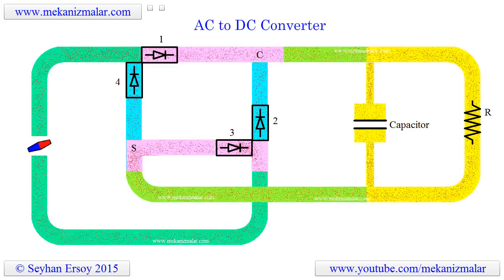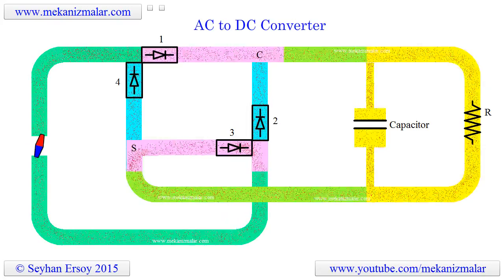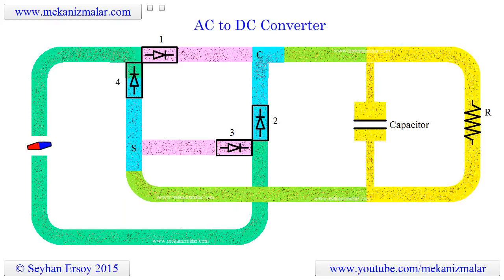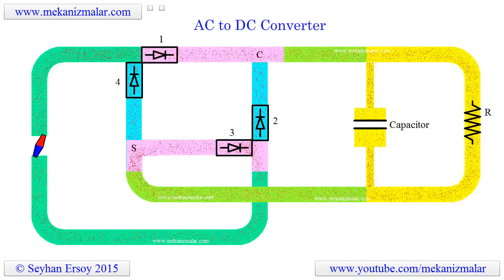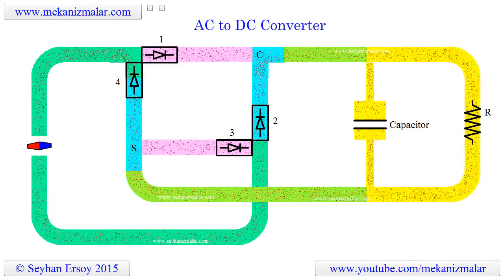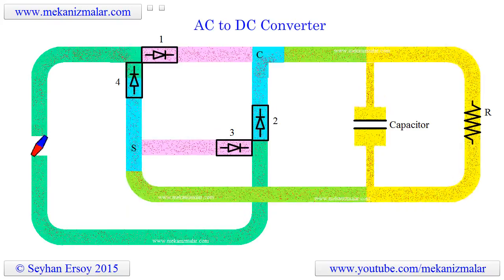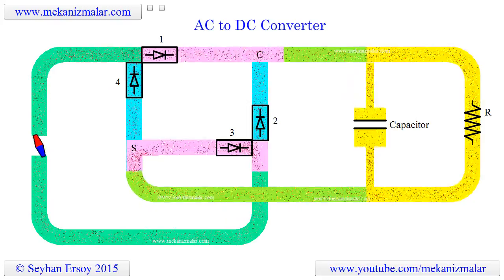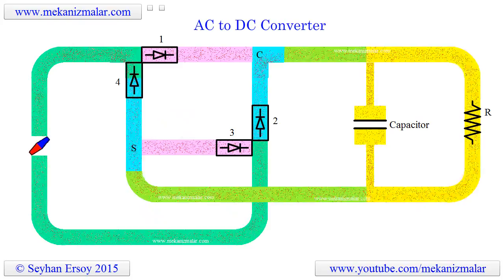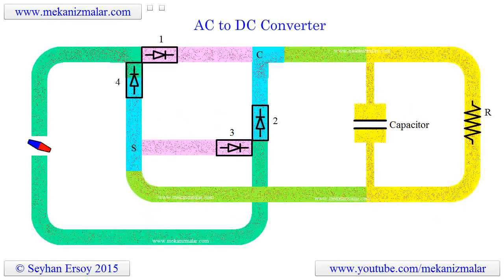The AC current is more efficient for transmitting electricity over long distances, while DC is not. We use AC current for powering industrial machines using many different types of AC electric motors. On the other hand, DC current is predominantly used in the electronic devices we rely on in our daily lives, such as computers, smartphones, and many other devices. DC current is also used in stepper motors and some low-cost servo motors.